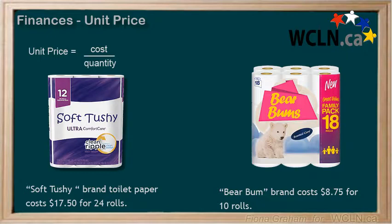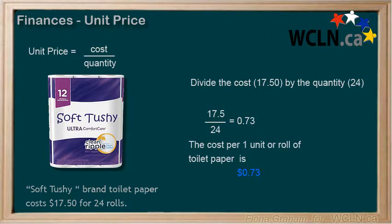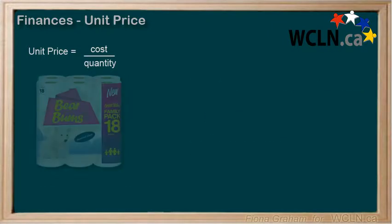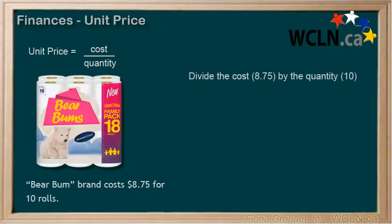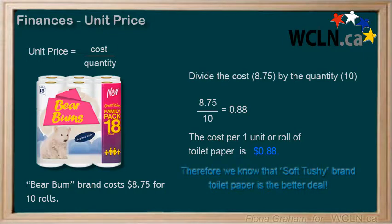We have to work out the unit cost for each brand of toilet paper in order to compare. For Soft Tushy brand, we divide the cost, $17.50, by the quantity, 24 rolls. So $17.50 divided by 24 equals $0.73 per roll. For Bare Bum brand, we divide the cost of $8.75 by 10 rolls, giving us $0.88 per roll. Therefore, the Soft Tushy brand toilet paper is the better deal.